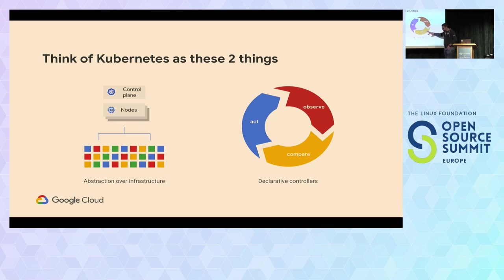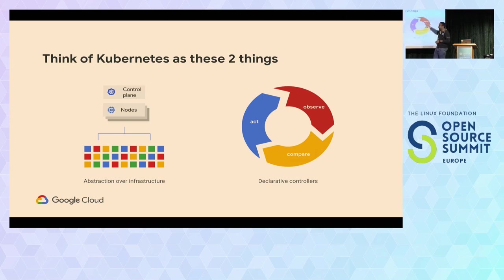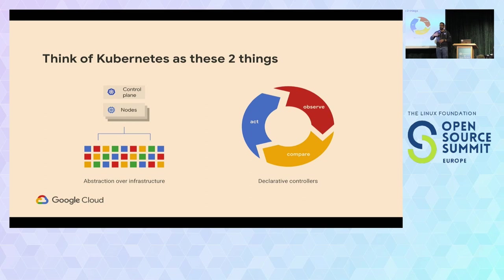I want to focus on one specific point, because a lot of times people confuse Kubernetes as only an abstraction layer. Kubernetes is effectively two different things. It is an abstraction layer with a control plane, data plane, and nodes. But one of the most powerful concepts of Kubernetes, in my opinion, is this concept of declarative controllers — the idea that as a developer or user, you don't tell the cluster what to do. You express intent to the cluster in the form of a YAML file, and then somewhere in the cluster there is a controller that takes that intent and translates it into reality.